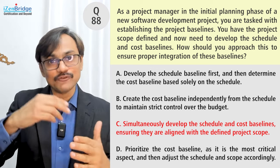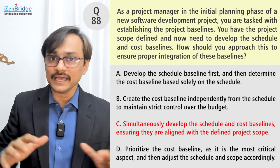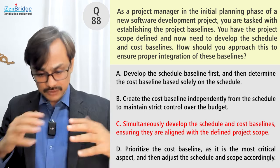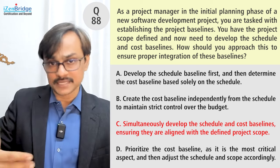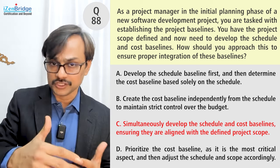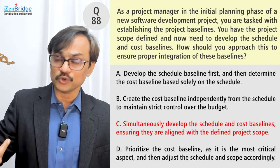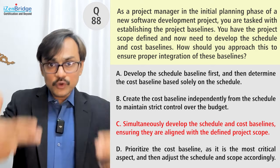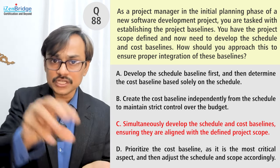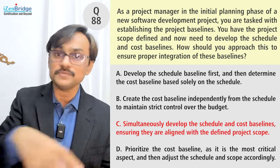Option C: simultaneously develop the schedule and cost baseline, ensuring they are aligned with the defined project scope — great idea. It doesn't mean working line by line at the same time. Rather, you prepare a project schedule, prepare the associated cost, present both, and if an issue arises in the schedule, you update it and update the cost too, presenting both together.